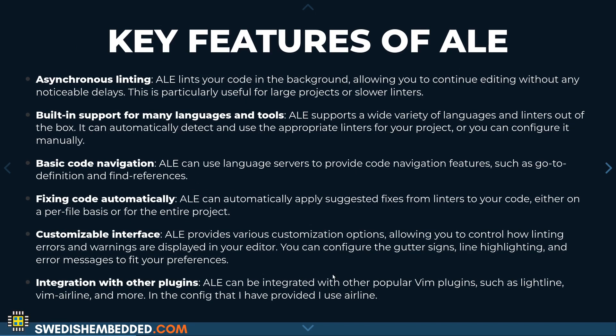The key features of the Asynchronous Lint Engine include that you can run the lint asynchronously. The biggest benefit of this plugin is that it integrates with existing tools — it's not actually a linting tool itself. It integrates with a lot of different tools that actually do the linting and runs those tools asynchronously, using the task management already embedded in Vim. It will then present those errors to you in an easy-to-view fashion directly in the editor.